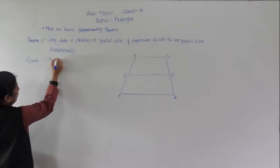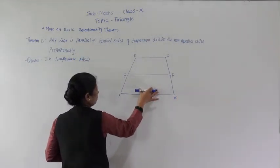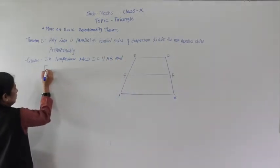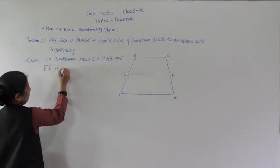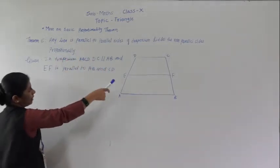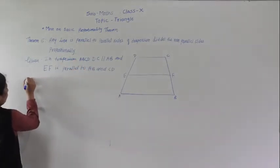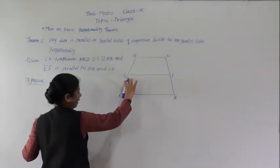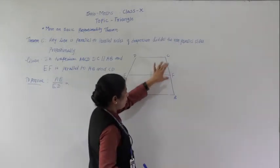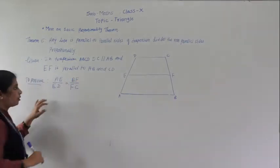Given: in trapezium ABCD, DC is parallel to AB. And EF is parallel to AB and CD. To prove: AE upon ED equals BF upon FC.